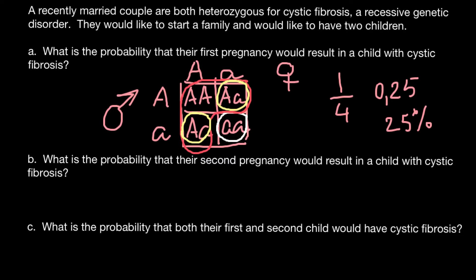Question B: what is the probability that the second pregnancy would result in a child with cystic fibrosis? No matter what the genotype of the first child is, it doesn't affect the genotype of the next child. So the probability that the second child would be homozygous recessive and have this genetic disorder would also be one fourth.